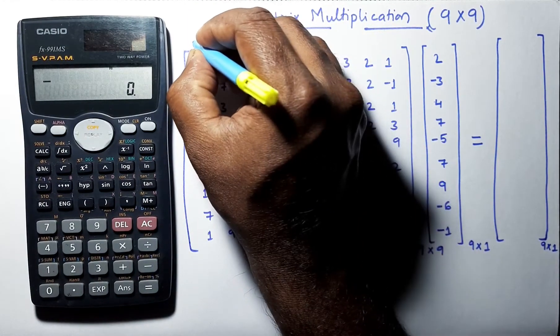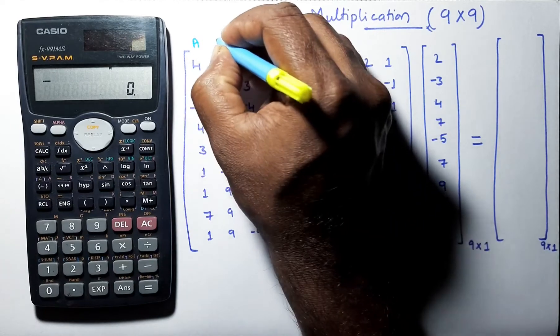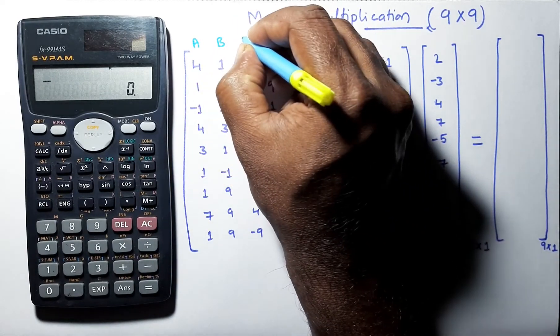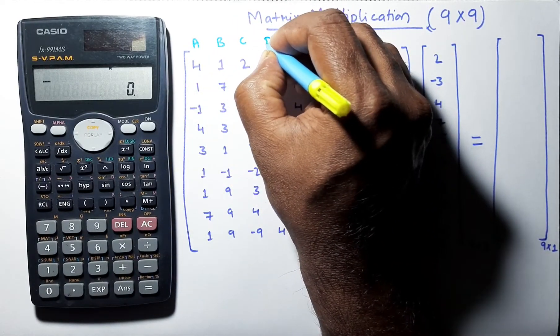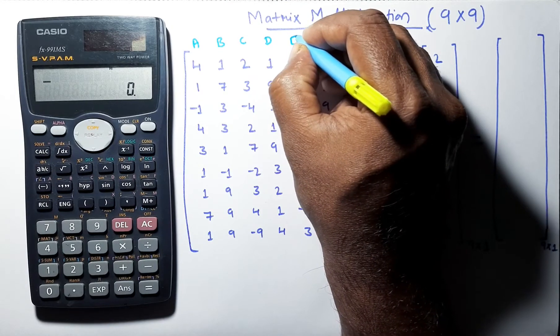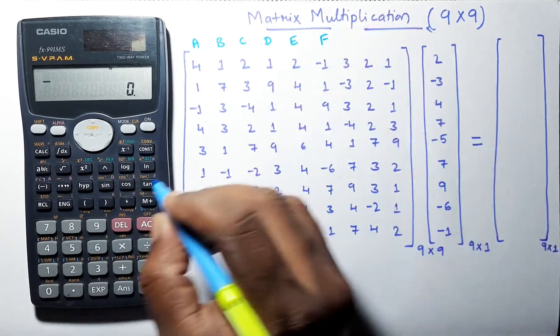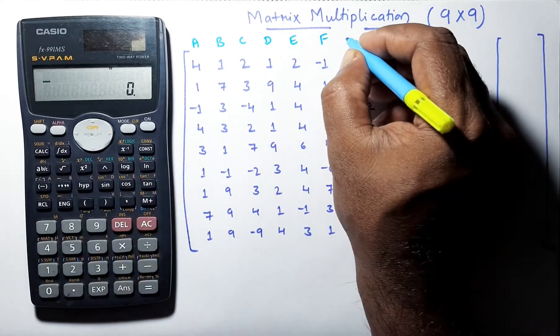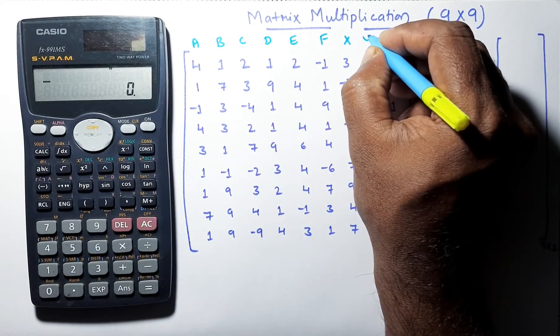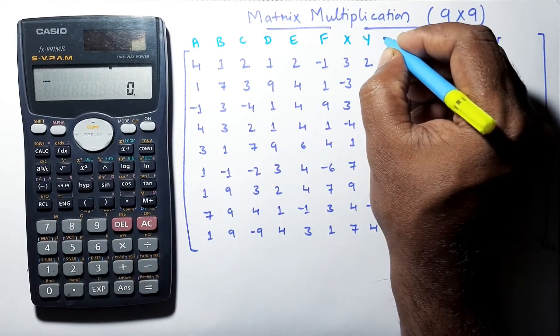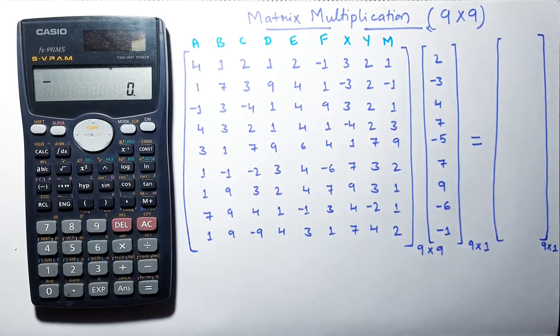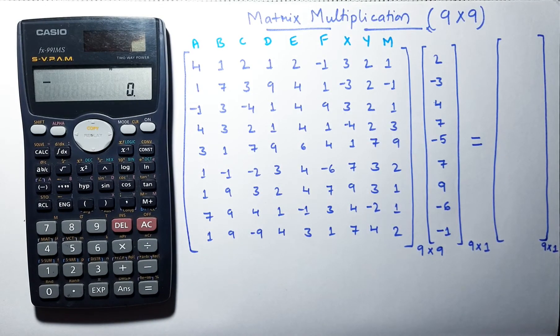Now, we will name these columns as A, B, C, D, E, F. And next, we have variables of X, Y and last one is M. We will assign each of these columns by different variables.